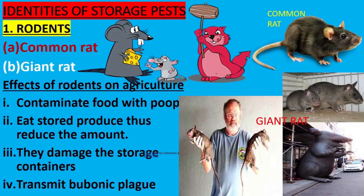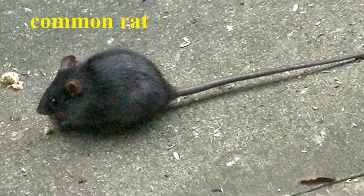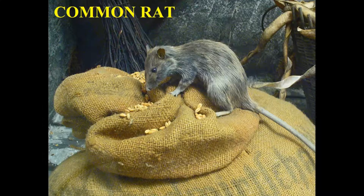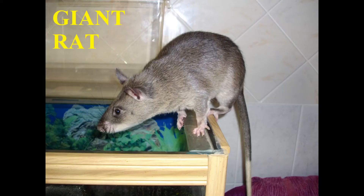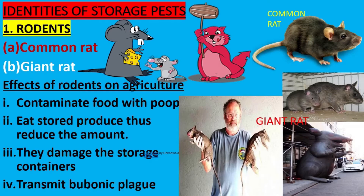1. Rodents. The common rat. Giant rat. Damage caused by rodents: they eat stored produce, thus reducing the available amount. Rats contaminate food with their droppings. They destroy produce storage containers and sacks. Rats also transmit bubonic plague.